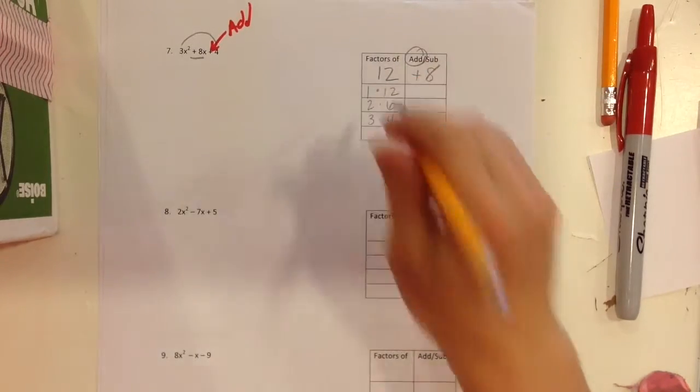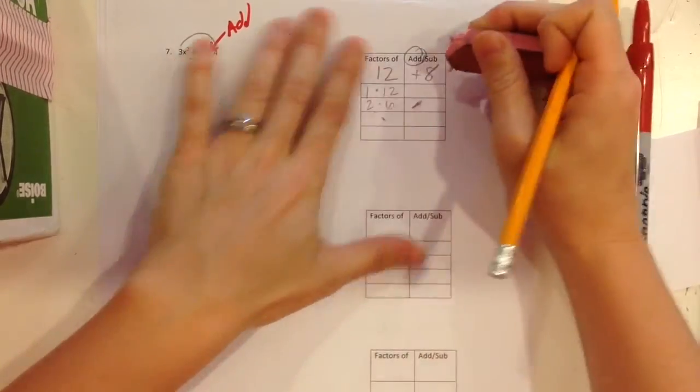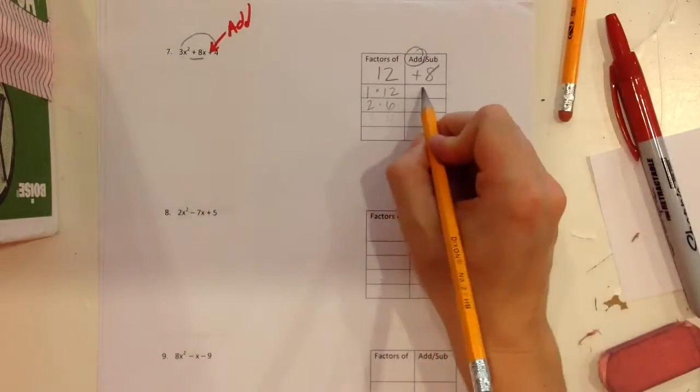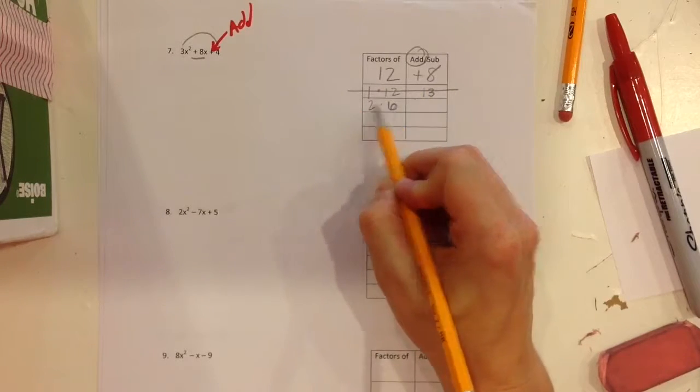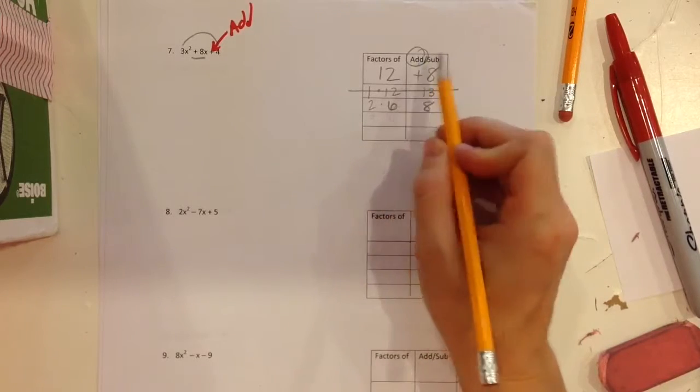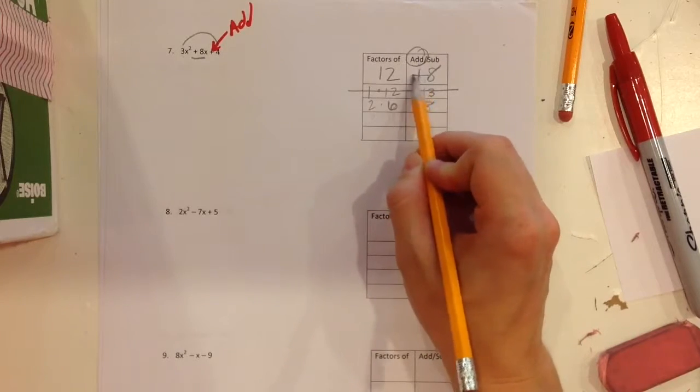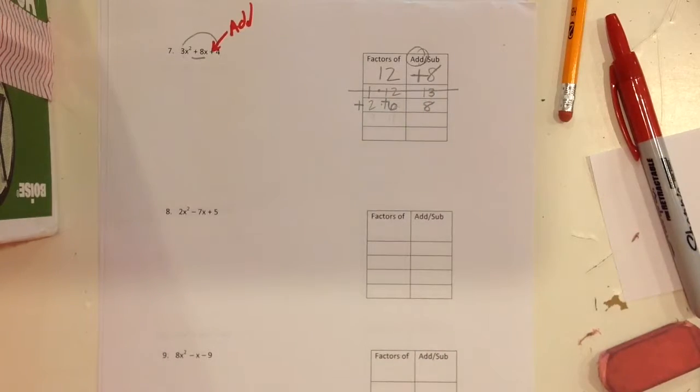Well, 2 and 6 will give me 8. So I don't need to do the 3 and the 4. Let me erase that one. So 1 and 12 is 13, that doesn't work. But 2 and 6, I can get 8. Now remember when you're adding, you have to have the same sign and they're going to both match that middle sign. So since I want to get a positive 8, they're both going to be positive.